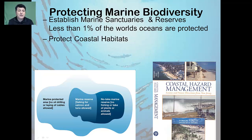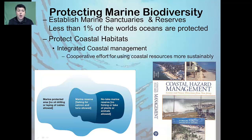Another way that we can protect marine biodiversity is through protecting coastal habitats. One way to do that is through establishing an integrated coastal management system, where we establish cooperative efforts on how to use coastal resources more sustainably. By bringing together developers, conservationists, and fishermen, we can establish plans that will help to manage our coastal environments more effectively.